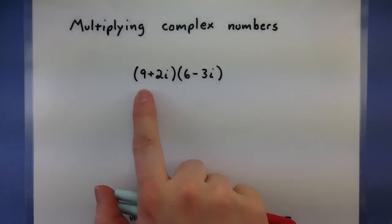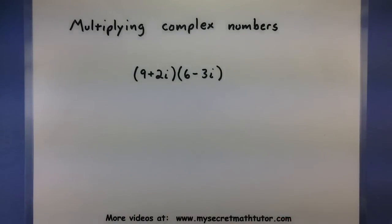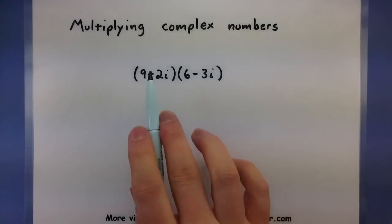So every term here in my 9 plus 2i will be multiplied by every term in my 6 minus 3i. This particular problem is going to look a lot like FOIL. So let's get started.